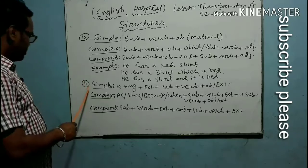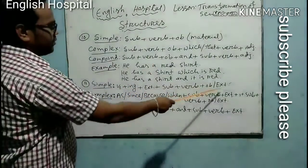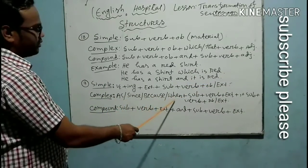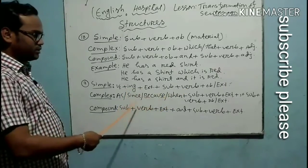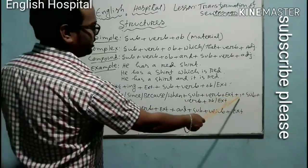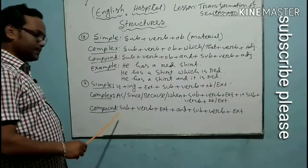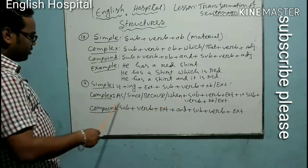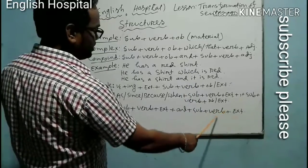Structure number eleven: the verb follows the same pattern as the subject verb. This is complex, using conjunctions such as 'as,' 'since,' 'because,' or 'when.' If there is a verb in the same clause and the verb is secondary, then it is subject, verb, extension. Then the combination of verb and extension forms the description.